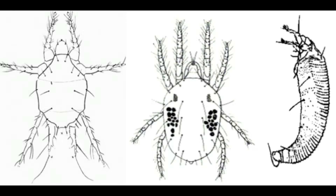The second group are the Tetranychid mites. The Tetranychids are pretty well known — a lot of them are pests. The most well-known species would probably be Tetranychus urticae, the two-spotted spider mite. A lot of people are very aware of this group and the mites in it as pests.